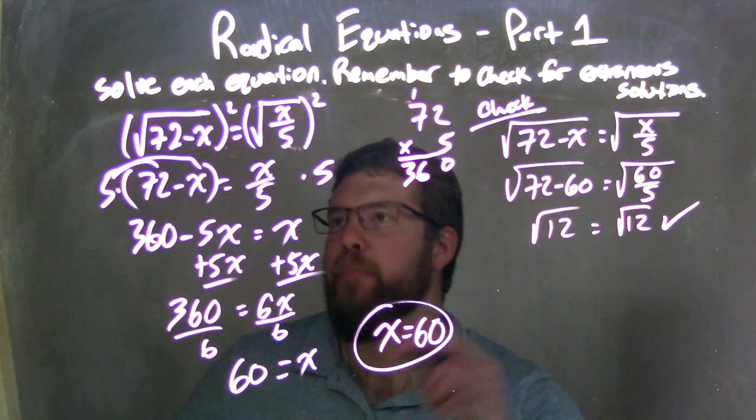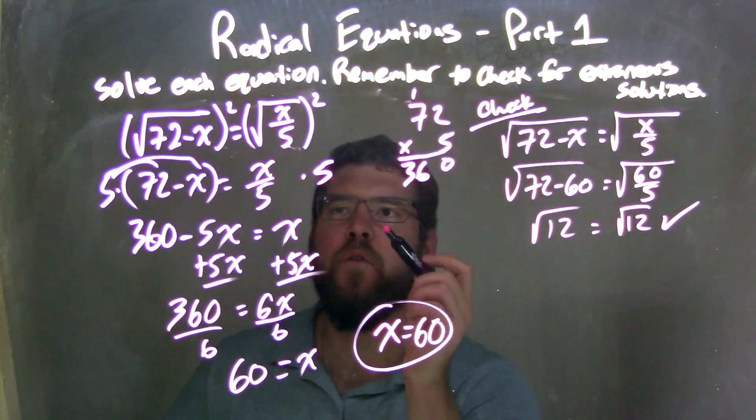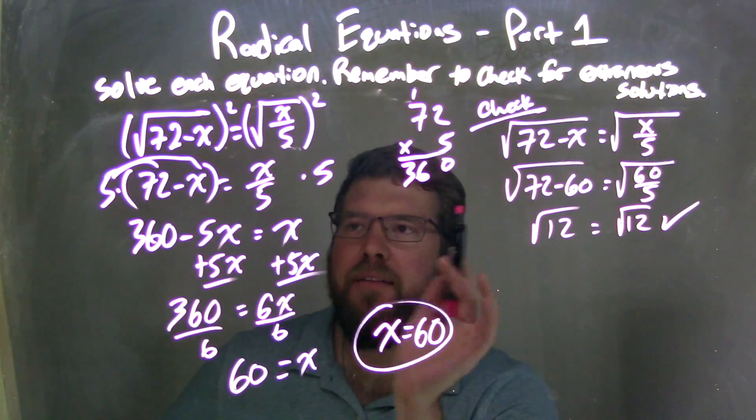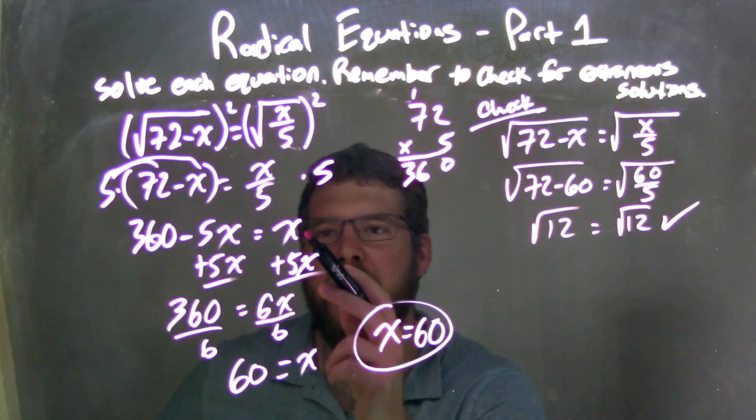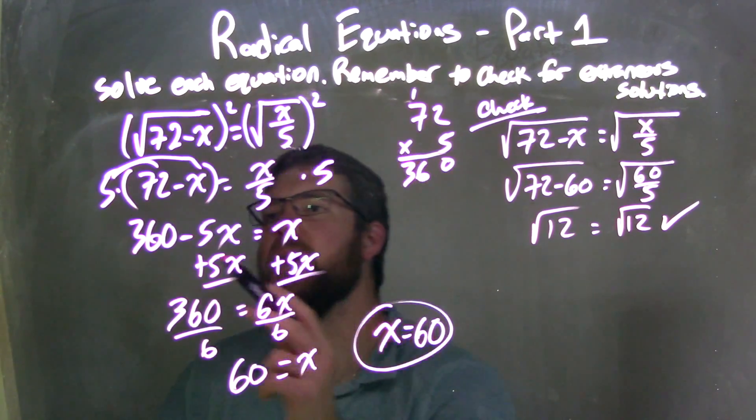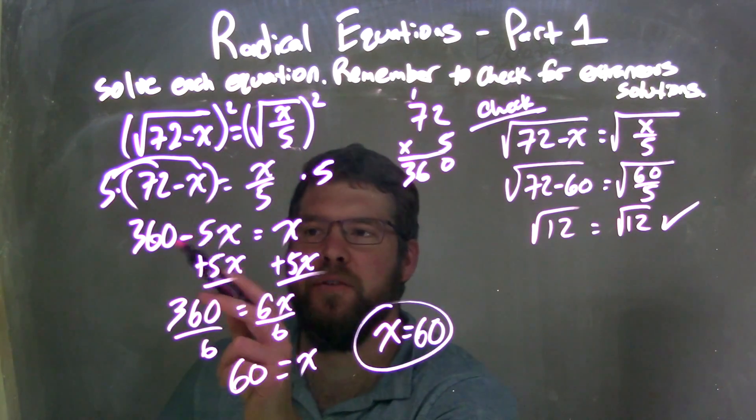So let's recap. We're giving the square root of 72 minus x equals the square root of x over 5. Squared both sides, learned the square roots, and then I multiplied 5 to both sides. By doing so, I'm left with an x on the right. But 5 times 72 is 360. 5 times x is 5x. And we're subtracting these two.